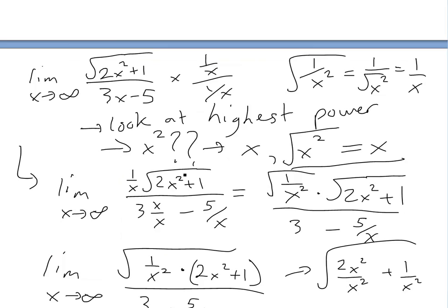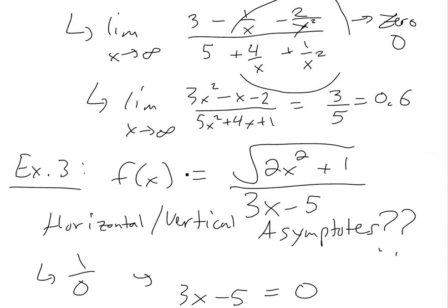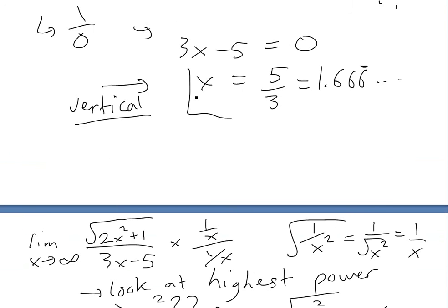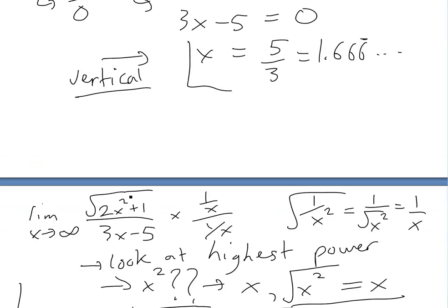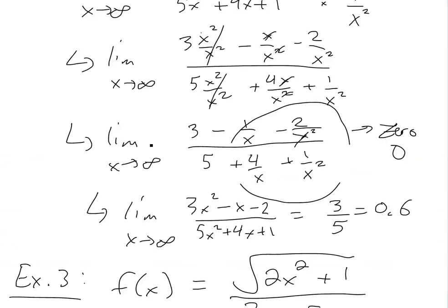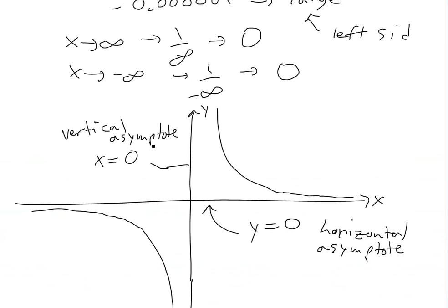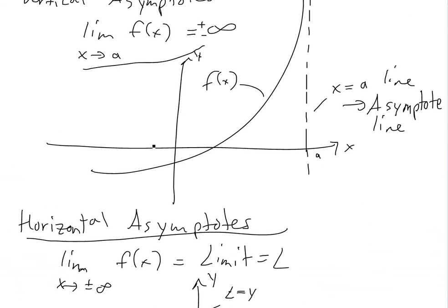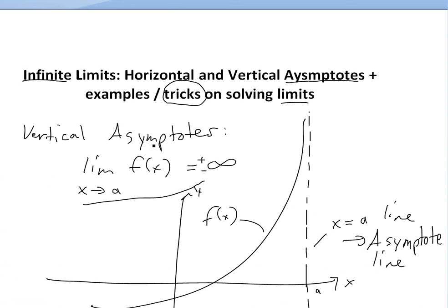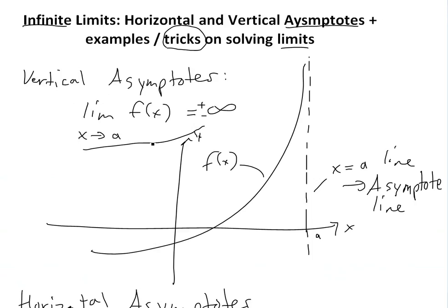That's all for today on limits. Remember these tricks — you can probably just look at the function and ignore the lower-order terms, so it's going to be 2 over 3 or √2 over 3. Hopefully you learned what asymptotes are — horizontal and vertical. Thanks for watching and stay tuned for another Math Easy Solution. Thank you.